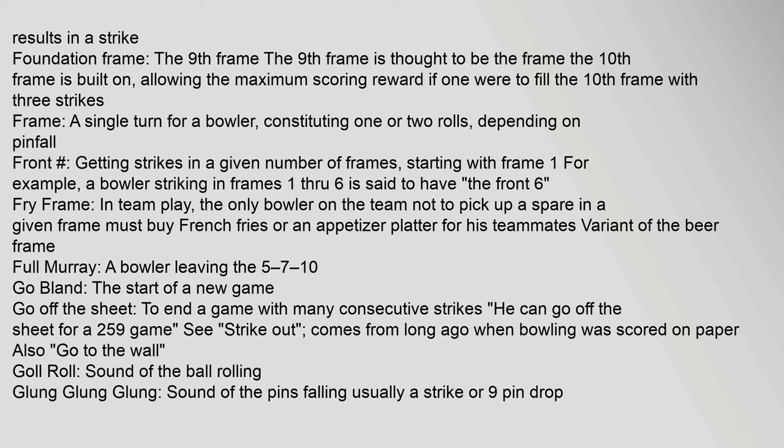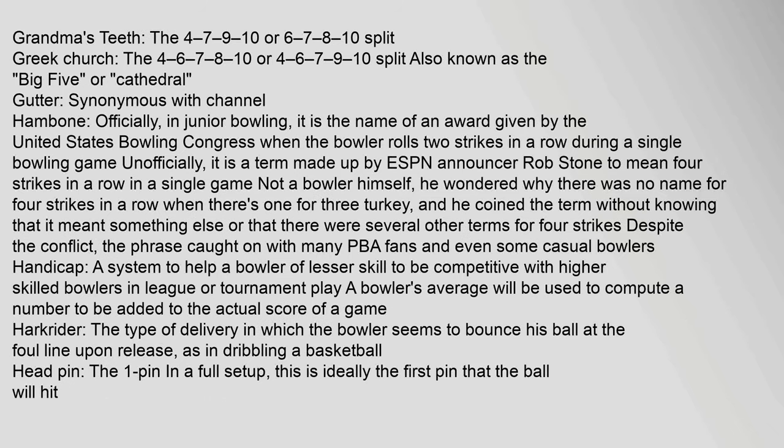Frame: a single turn for a bowler, constituting one or two rolls depending on pinfall. Front: getting strikes in a given number of frames starting with frame one — e.g., striking in frames one through six is said to have the front six. Fry frame: in team play, the only bowler not to pick up a spare in a given frame must buy french fries or an appetizer platter for his teammates; a variant of the beer frame. Full murray: a bowler leaving the 5-7-10. Go bland: the start of a new game. Go off the sheet: to end a game with many consecutive strikes.